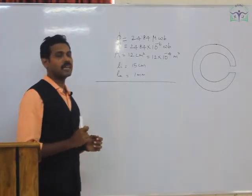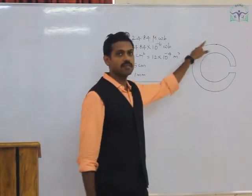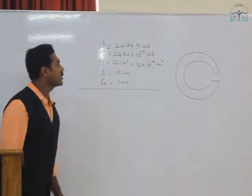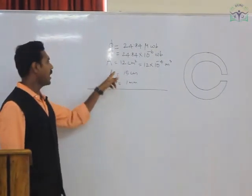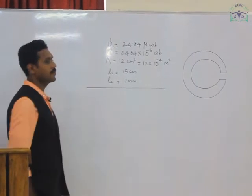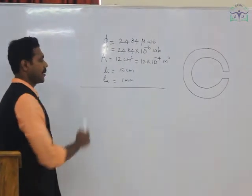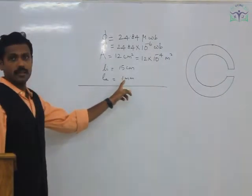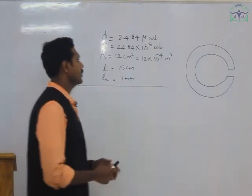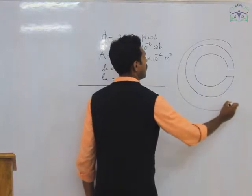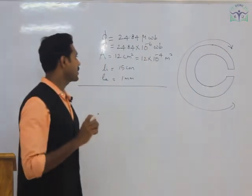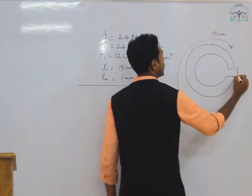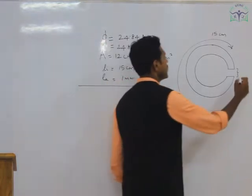Our magnetic circuit consists of a magnetic portion and an air gap portion. The length of the magnetic circuit in iron, Lᵢ, is given as 15 cm. The length of the air gap, which is made by a socket, is given as 1 mm.